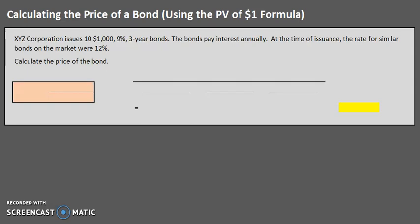Hello and welcome to another TLC tutoring accounting video. In this video, we are going to be going over how to calculate the price of a bond, specifically using the present value of a dollar formula. You may have learned that there are many different ways to calculate the price of a bond — you could use calculators, Excel, formulas, or time value of money tables. In this one, we are going to be using a formula.